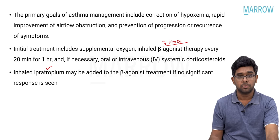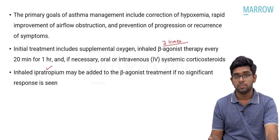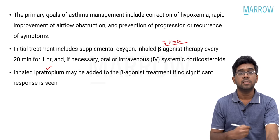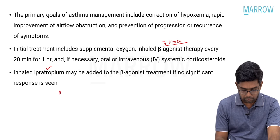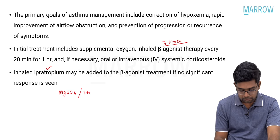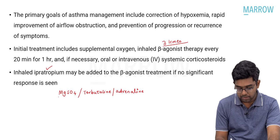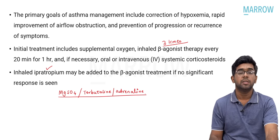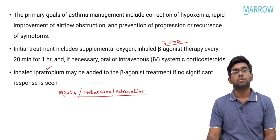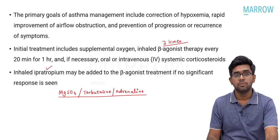If the acute exacerbation is still not responding, go for other options including administration of magnesium sulphate, terbutaline, and parenteral adrenalin. These would be the treatment options at this stage if the child is not responding to previous management.